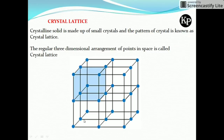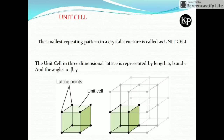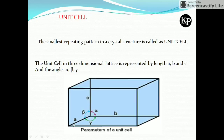In the crystal lattice, the smallest repeating pattern is called the unit cell. In the figure, you can see different atoms present in a particular pattern, but the smallest repeating pattern — repeated here, here, and here — is the unit cell. The unit cell has lengths A, B, and C, and the angles between them are alpha, beta, and gamma.